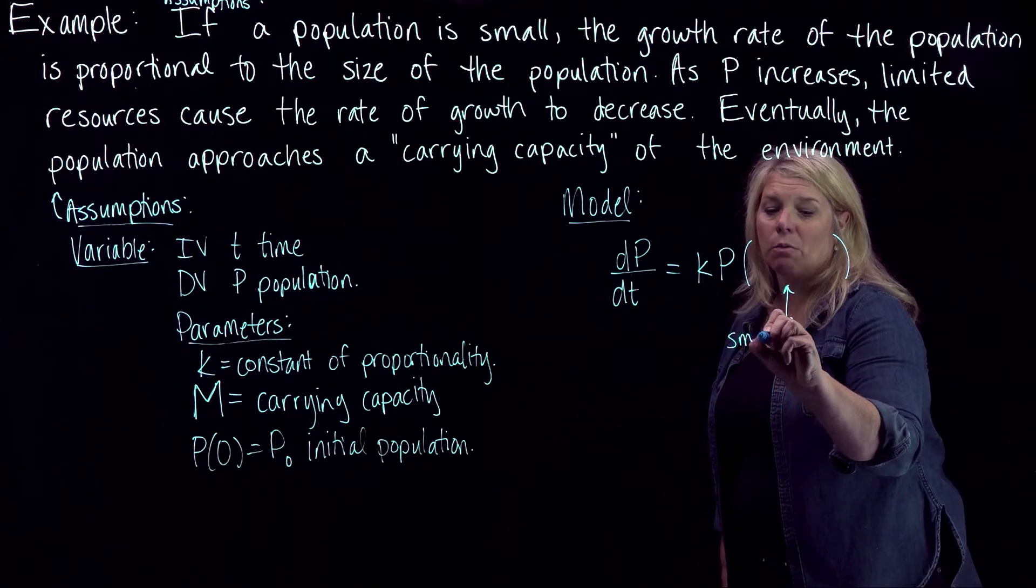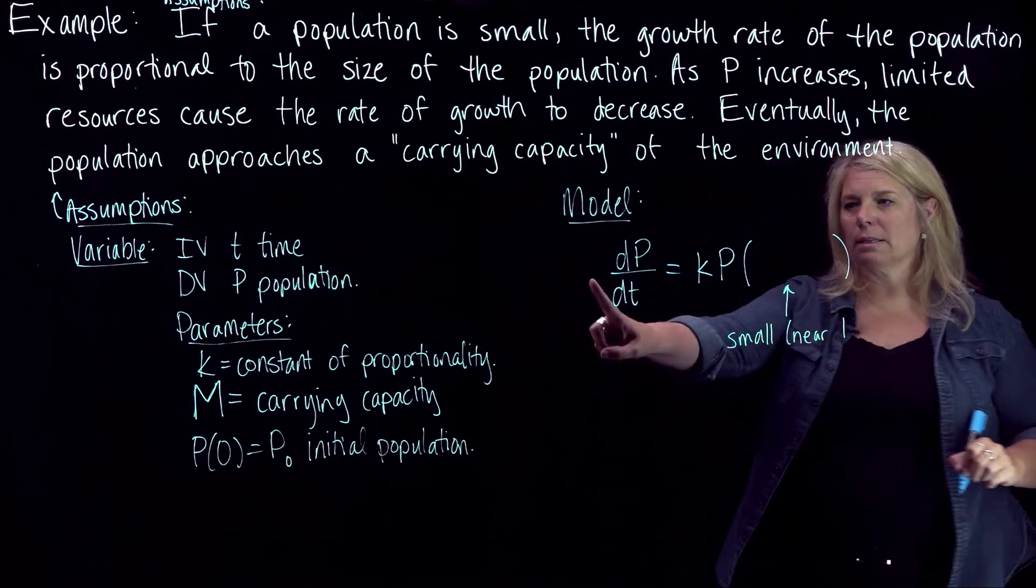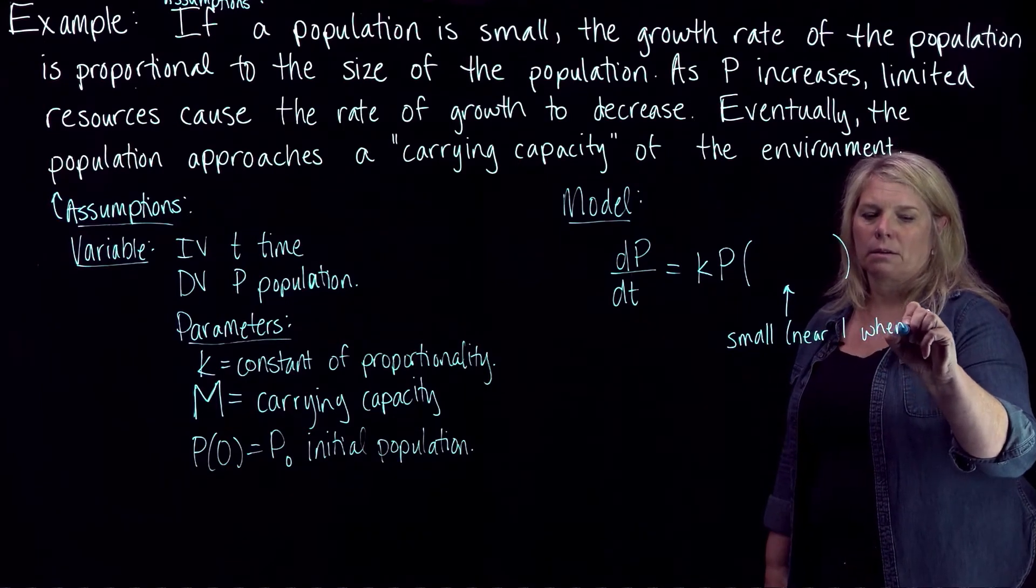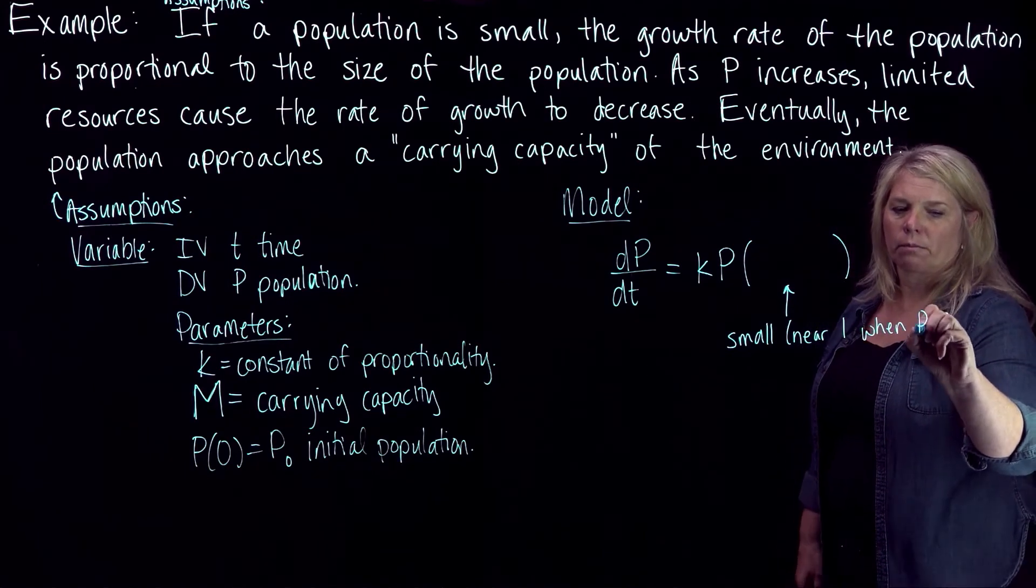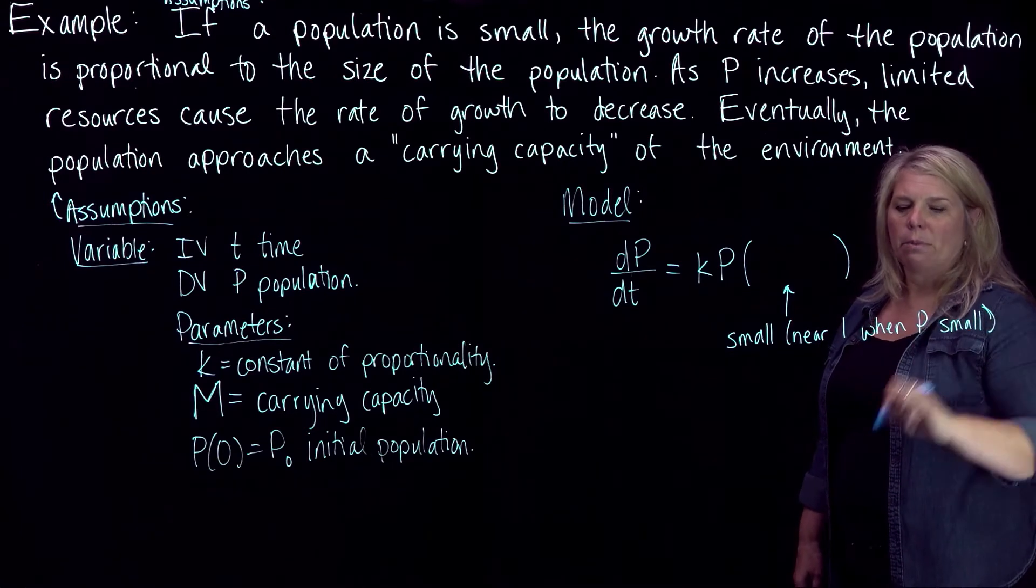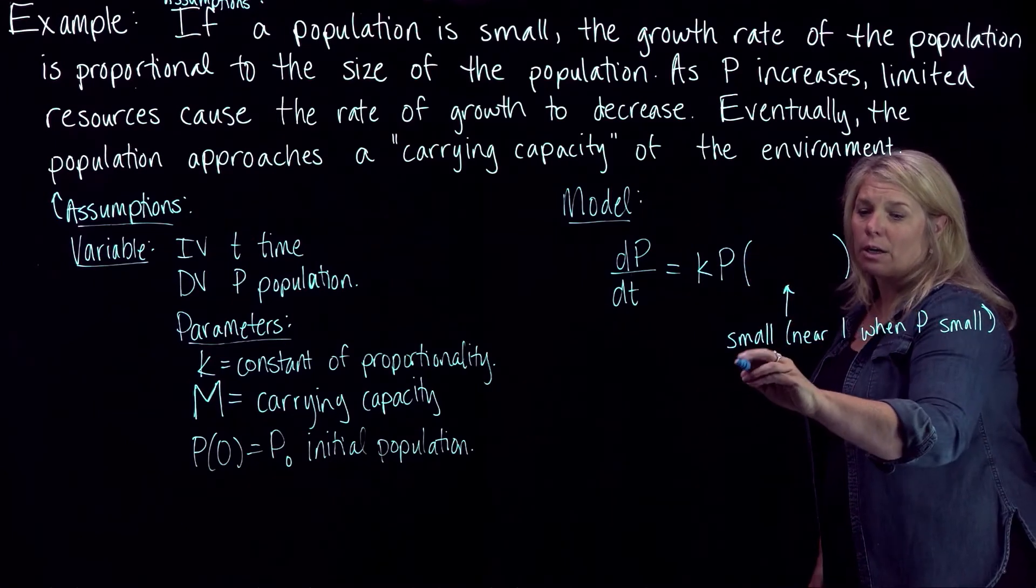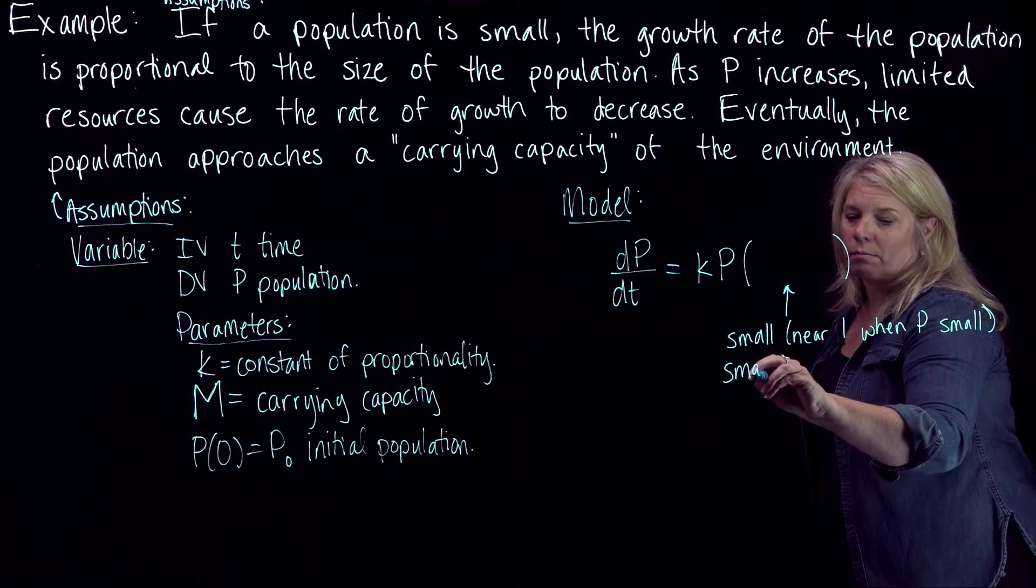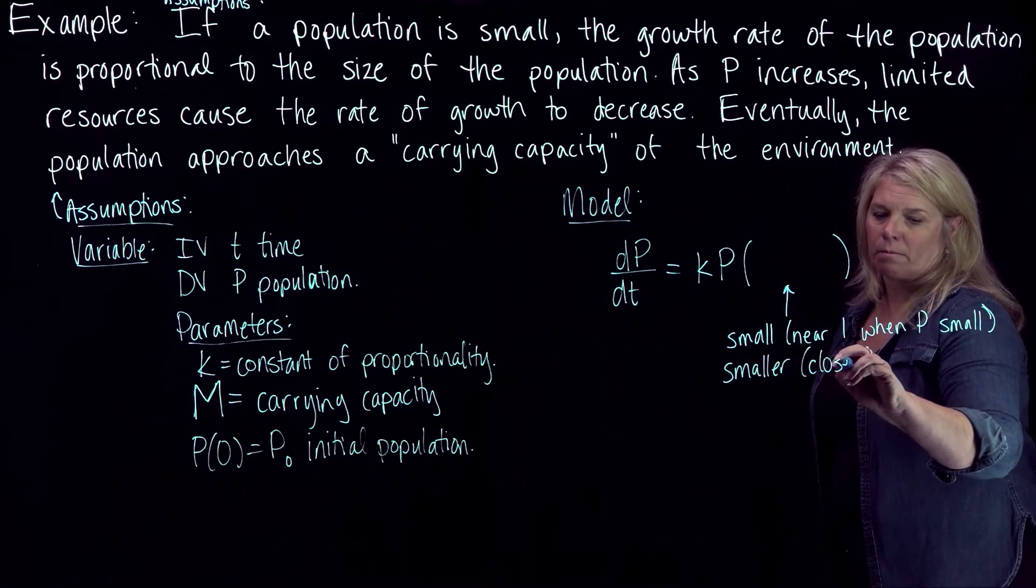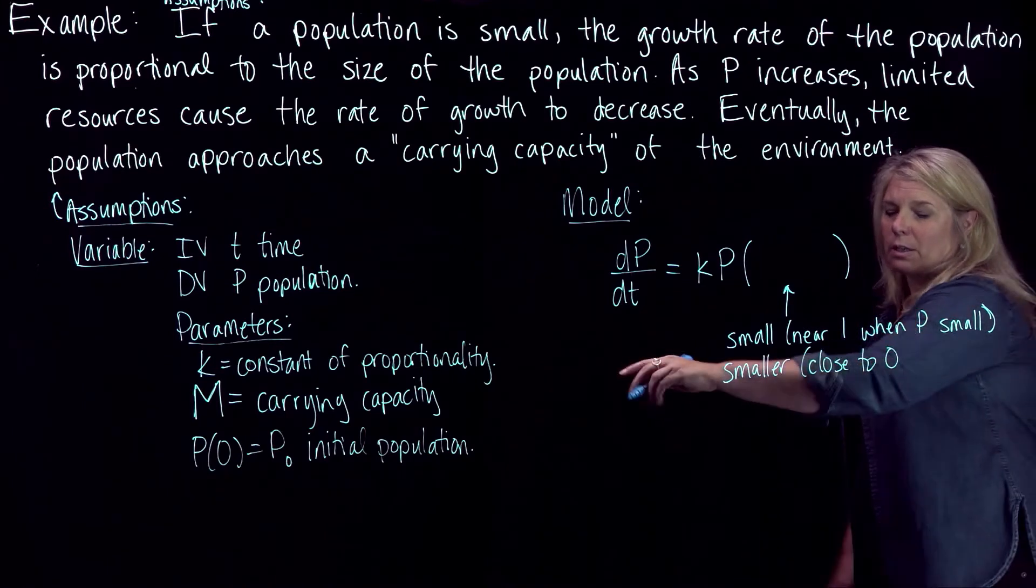We want this to be near 1 so that this is just dP/dt equals kP when P is small. Near 1 when P is small. And then we want this factor to be even smaller, closer to 0 when P is larger, when P is close to M.